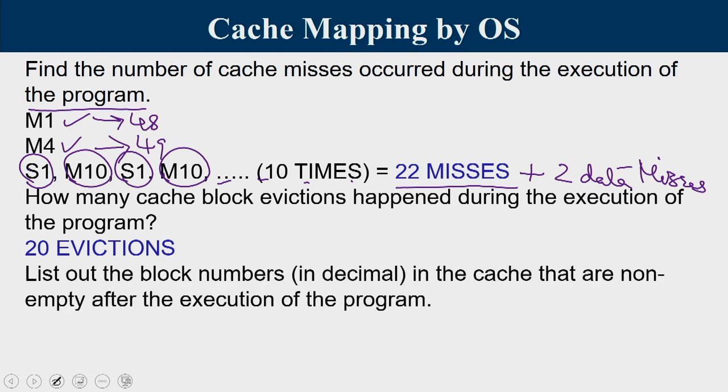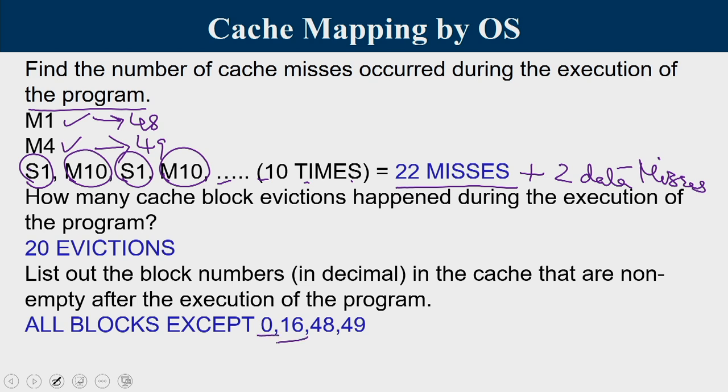After execution, the non-empty sets in cache are set 0 and set 16 (holding the two data words), set 48 (holding M1–M3), and set 49 (holding whichever of M or S was last loaded). This illustrates how address peculiarity in direct-mapped caches causes conflict misses when functions map to the same cache block. With that, we conclude this tutorial on cache optimizations and OS role in mapping. Thank you.